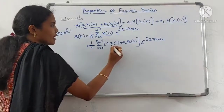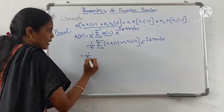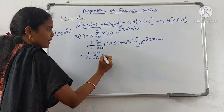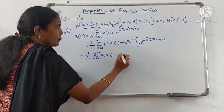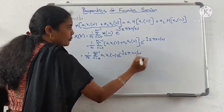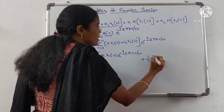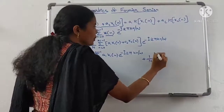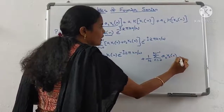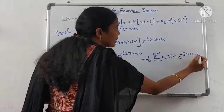Now, multiply a1 x1(n) into e^(minus j 2 pi k n / N). So, that gives 1/N summation from n=0 to N-1 of a1 x1(n) e^(minus j 2 pi k n / N) plus 1/N summation from n=0 to N-1 of a2 x2(n) e^(minus j 2 pi k n / N).